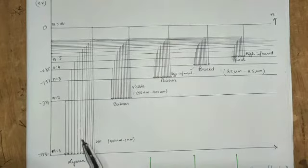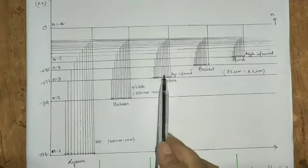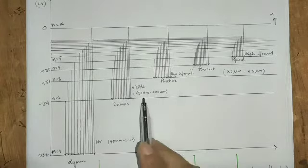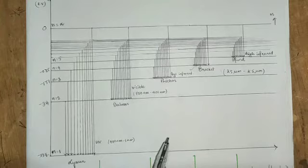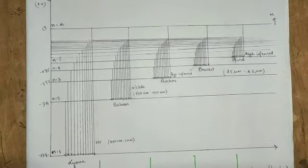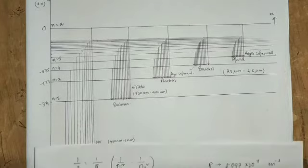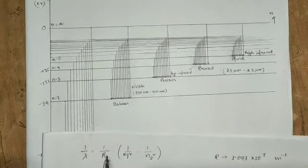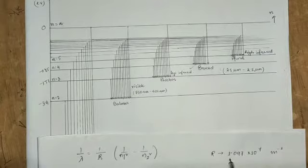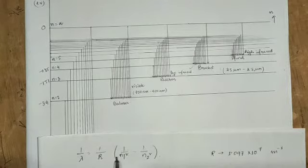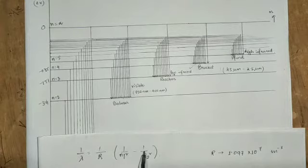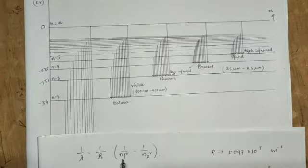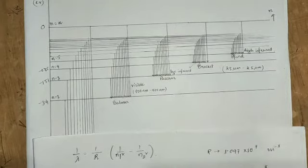So the spectral series are: Lyman series, Balmer series, Paschen series, Brackett series, and Pfund series. Now let's look at the mathematical expression for wavelength. We have the Rydberg formula: 1/λ = R × (1/n1² − 1/n2²), where R = 1.097 × 10⁷ m⁻¹, n1 is the lower energy level, and n2 is the higher energy level.